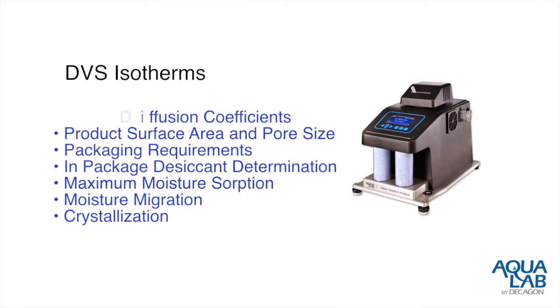With DVS isotherms you can investigate kinetics absorption, moisture diffusion coefficients, product surface area and pore size, packaging requirements, in-package desiccant determination, maximum moisture sorption, moisture migration, and crystallization.